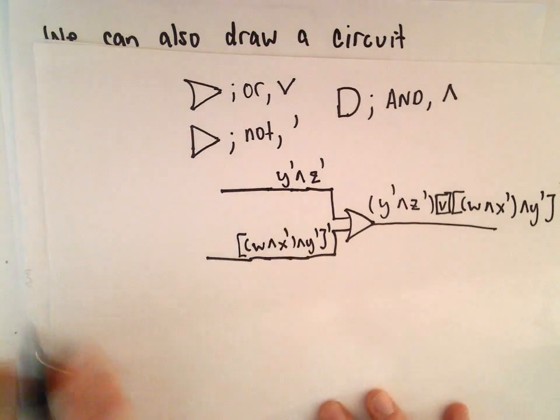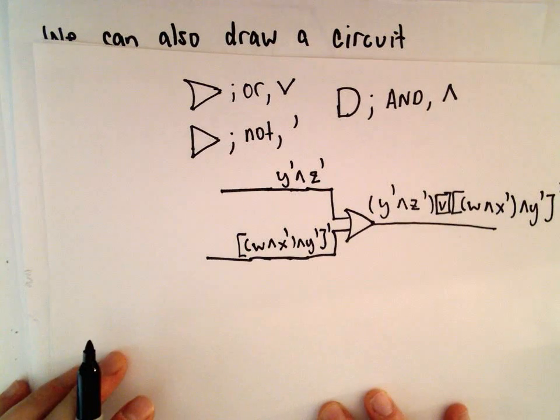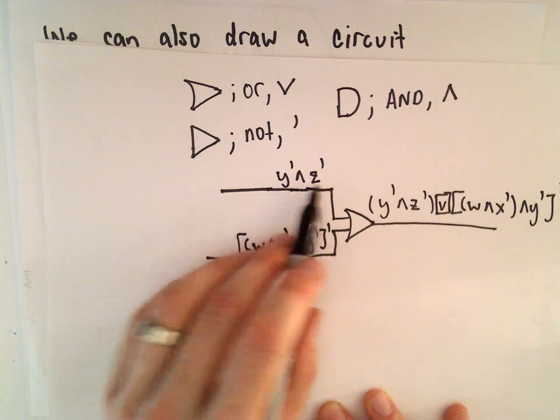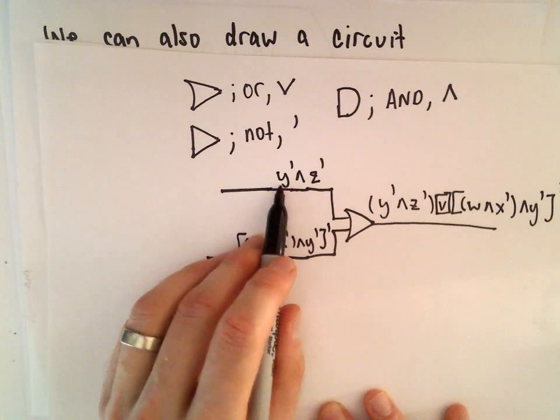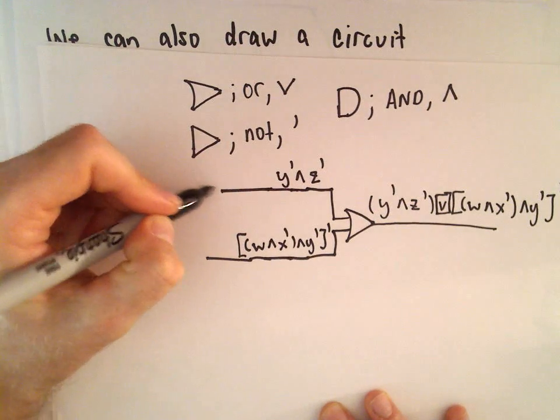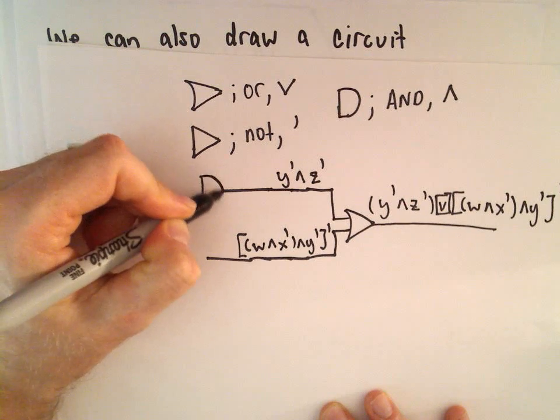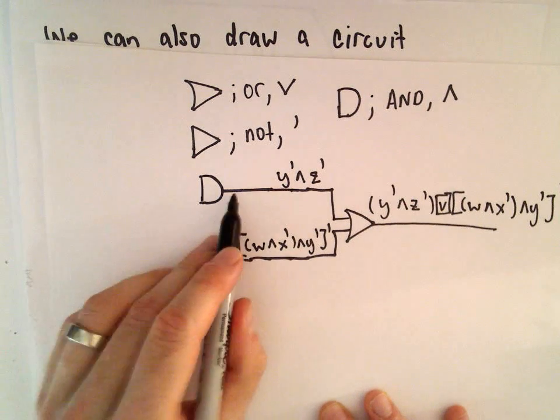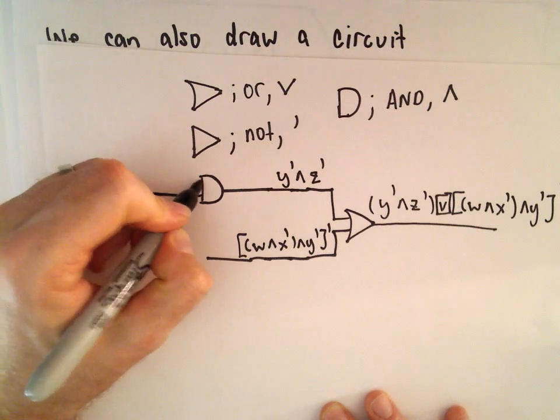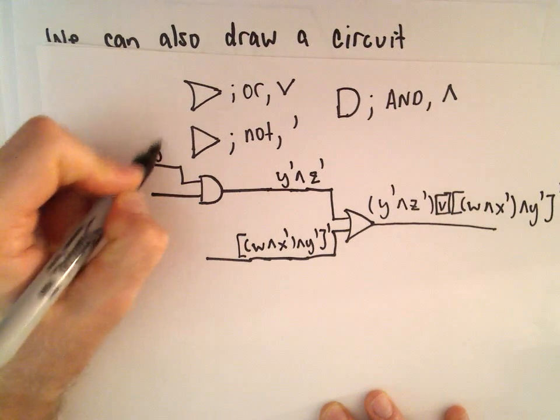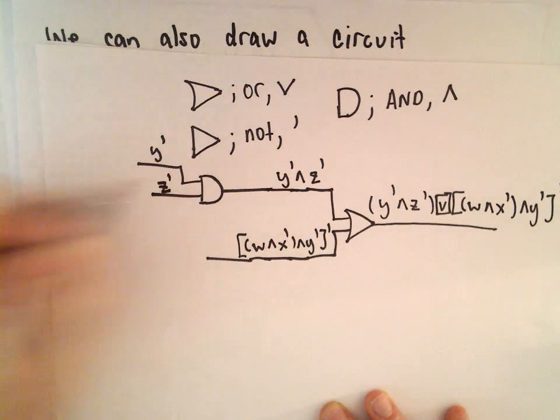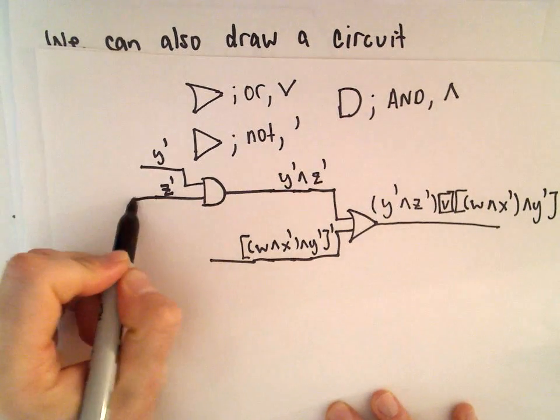Let's look at the top branch here. We'll work on that one first. What we have is we have an AND between two statements, NOT Y and NOT Z. So I'm going to create an AND gate. Coming into our AND gate, we would want those two statements: NOT Y and then NOT Z.